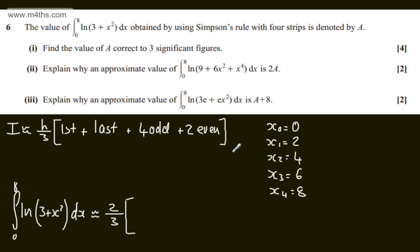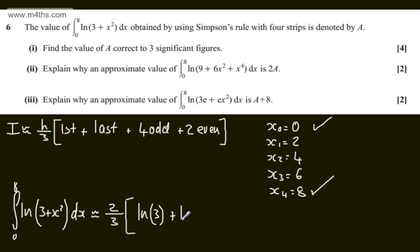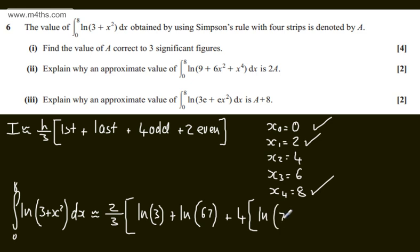We're going to have the first term, when x is equal to 0: subbing that in, we get the natural log of 3 plus 0 squared, so that's the natural log of 3. We now consider the last, subbing in 8: 8 squared is 64, so we'll have plus the natural log of 67. We now need 4 lots of the odds. The first odd is when x is equal to 2, so we'll have the natural log of 2 squared plus 3, which gives the natural log of 7.